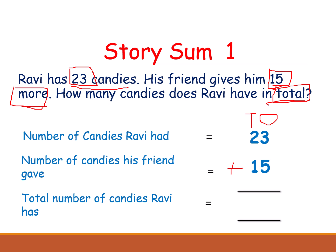Here we have 3 and 5. What is the biggest number? 5. Keep 5 in your mind and open 3 fingers. Addition means going forward, counting after numbers. After 5: 6, 7, 8. So what is 3 plus 5? 8.